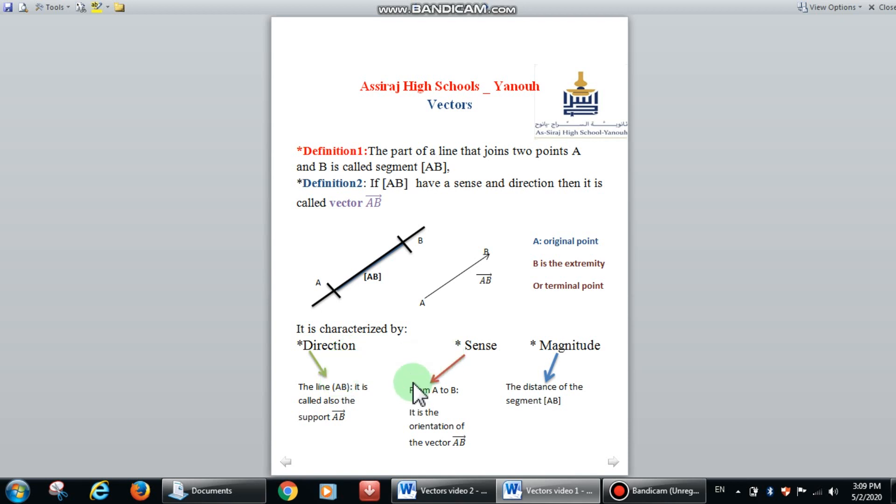It sends from A to B, because A is the beginning point and B is the ending point. For the magnitude, it has the distance of segment AB or the length of segment AB.